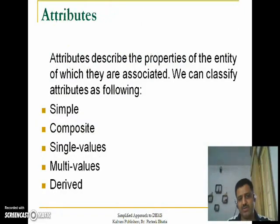So, Simple Attributes like Roll Number, Composite like Name with First Name and Last Name, Single Value like Roll Number, Name, Class, Multi Value like Hobbies, Email IDs, Mobile Number, and Derived Attributes like Age. These are the total five types of Attributes.